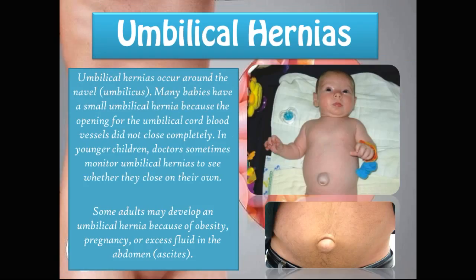Umbilical hernias occur around the navel or umbilicus. Many babies have a small umbilical hernia because the opening for the umbilical cord blood vessels did not close completely. In younger children, doctors sometimes monitor these to see whether they close on their own. Some adults may develop an umbilical hernia because of obesity, pregnancy, or excess fluid in the abdomen, which is called ascites.